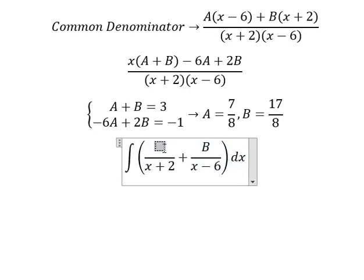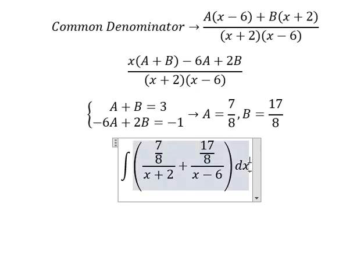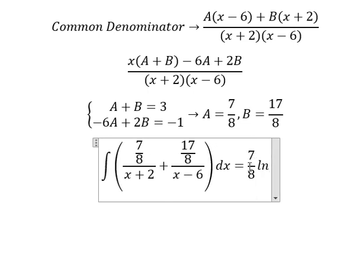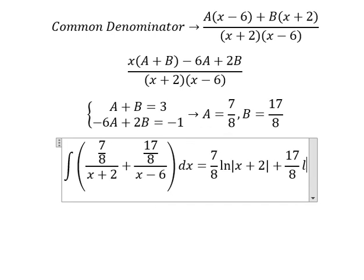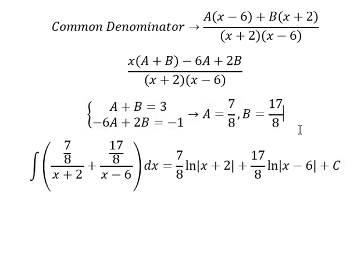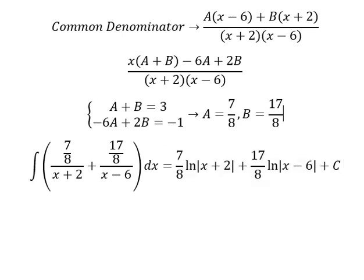About A that is about 7 over 8, about B that is about 17 over 8. So we have the integral of 7 over 8 times 1 over x plus 2 plus 17 over 8 times 1 over x minus 6 dx, which equals 7 over 8 natural log of absolute value x plus 2 plus 17 over 8 natural log of absolute value x minus 6 plus C. This is the final answer. This is the end, thank you for watching.